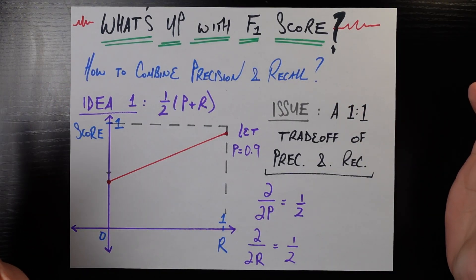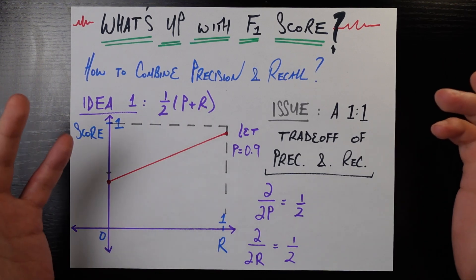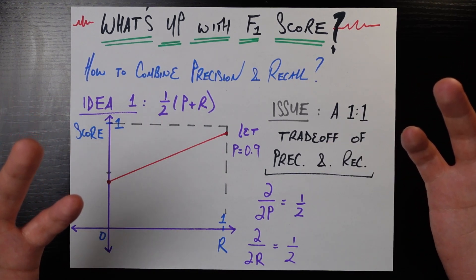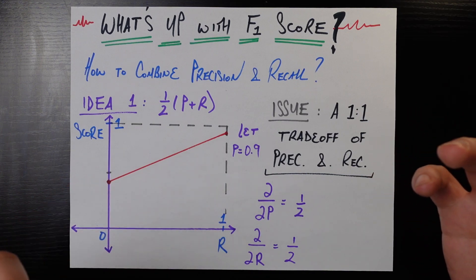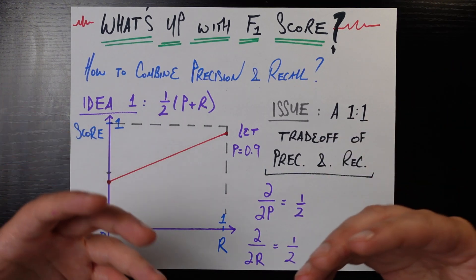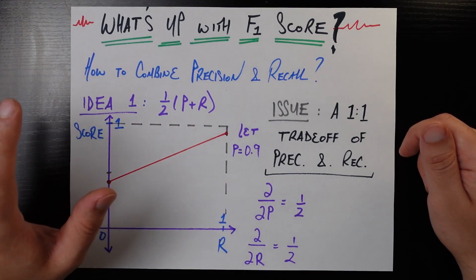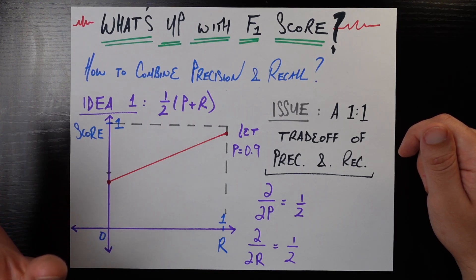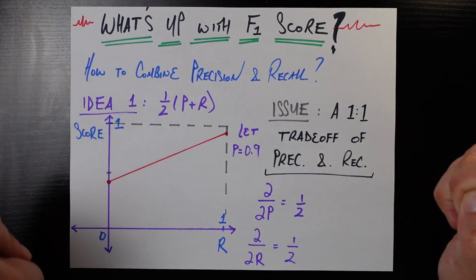Today we're going to talk about the really weird form of the F1 score, which is a metric in data science that tries to combine precision and recall. When I first learned about this and was shown the formula, it looked so weird and didn't seem like the intuitive way to combine these two metrics. What I want to talk about is how we actually get to that form and why it has certain properties we want — otherwise it seems like a formula someone just handed to us that's unnecessarily complicated. Whenever something doesn't make sense at first glance, we should unpack why it looks the way it does.